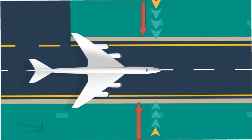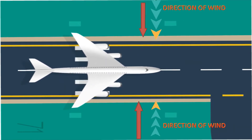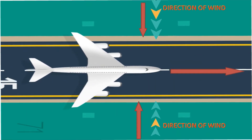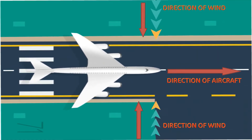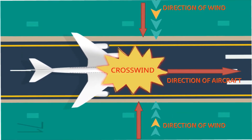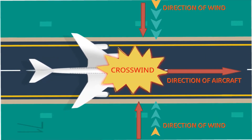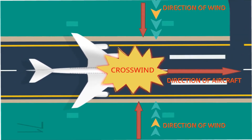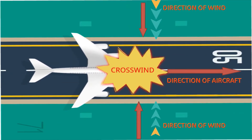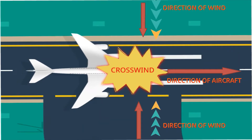If the wind direction is perpendicular to the direction of the aircraft movement, then the condition is known as crosswind. Wind in any other direction is interpolated based on these three conditions.